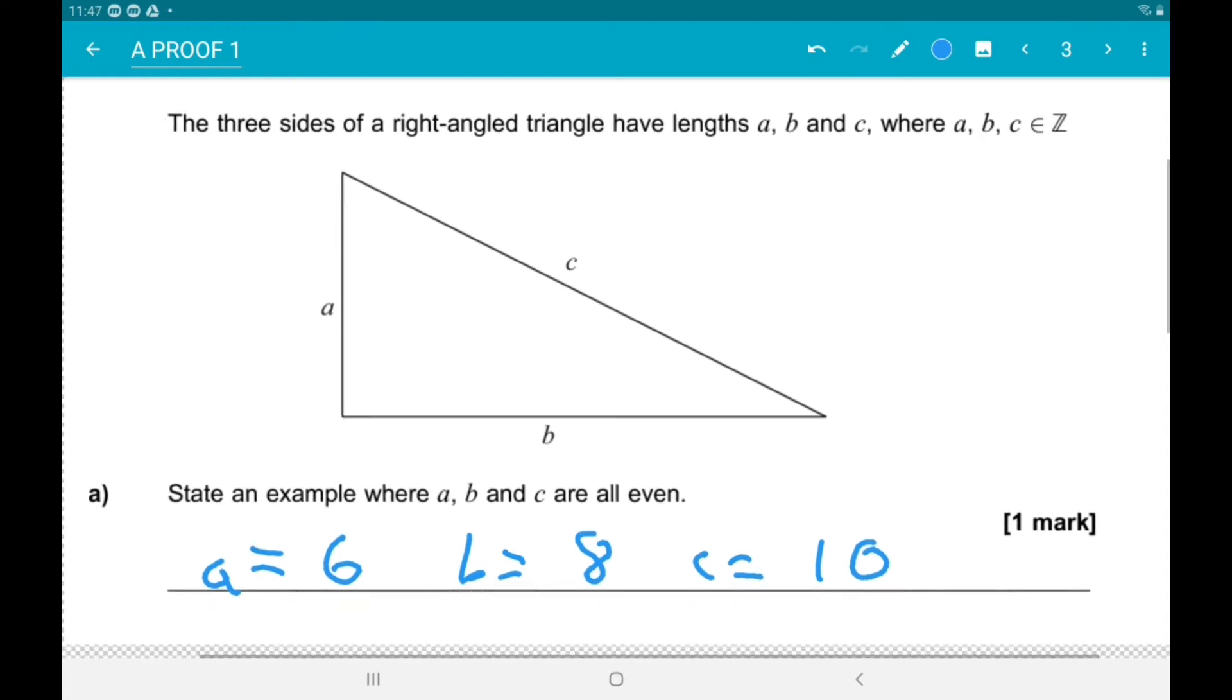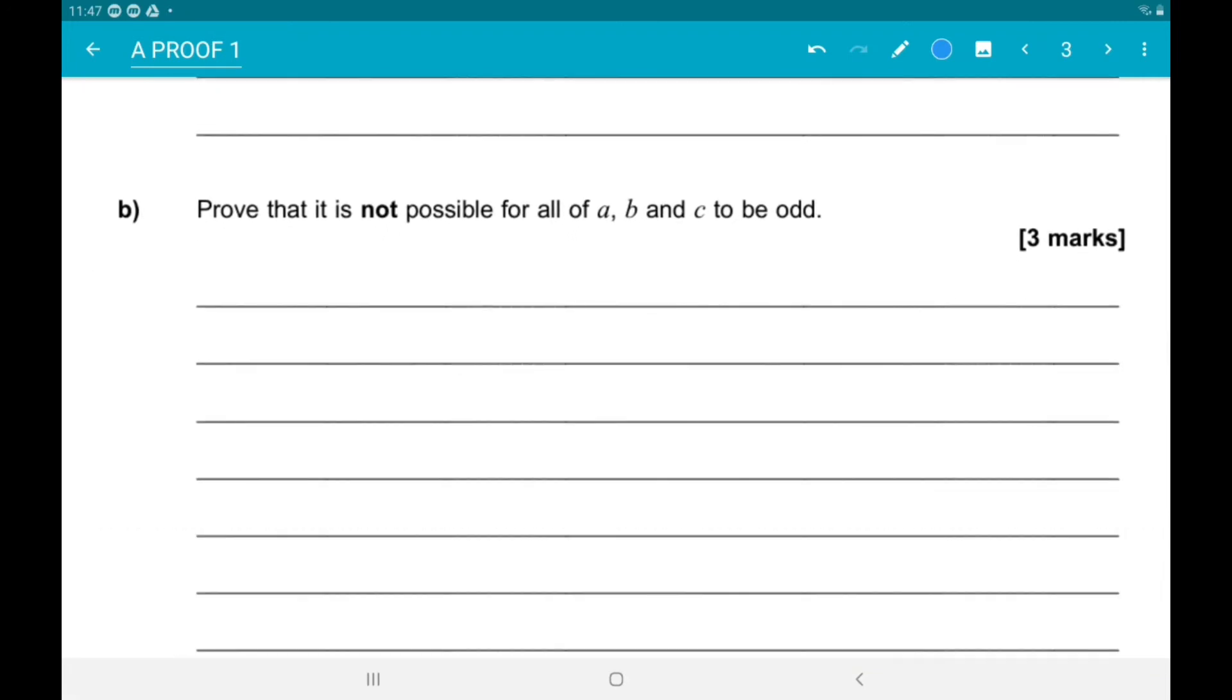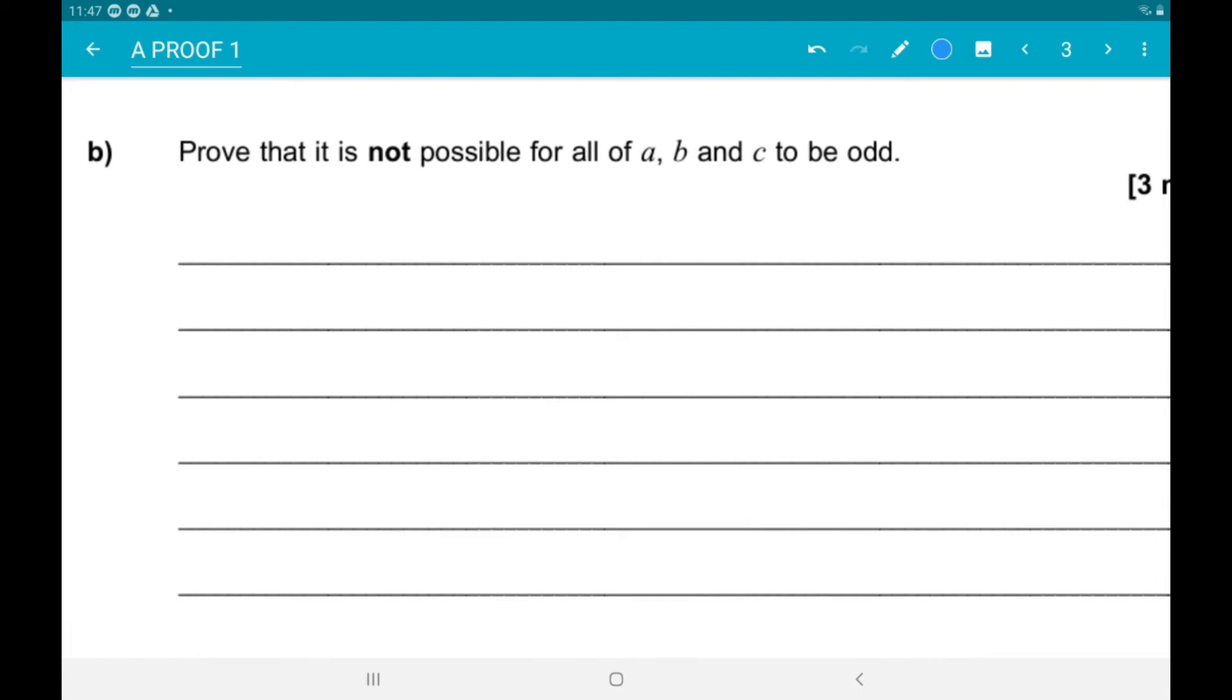Alright, and then part B, we'll prove a, b, and c cannot all be odd. So what we're going to do is let a and b be odd.